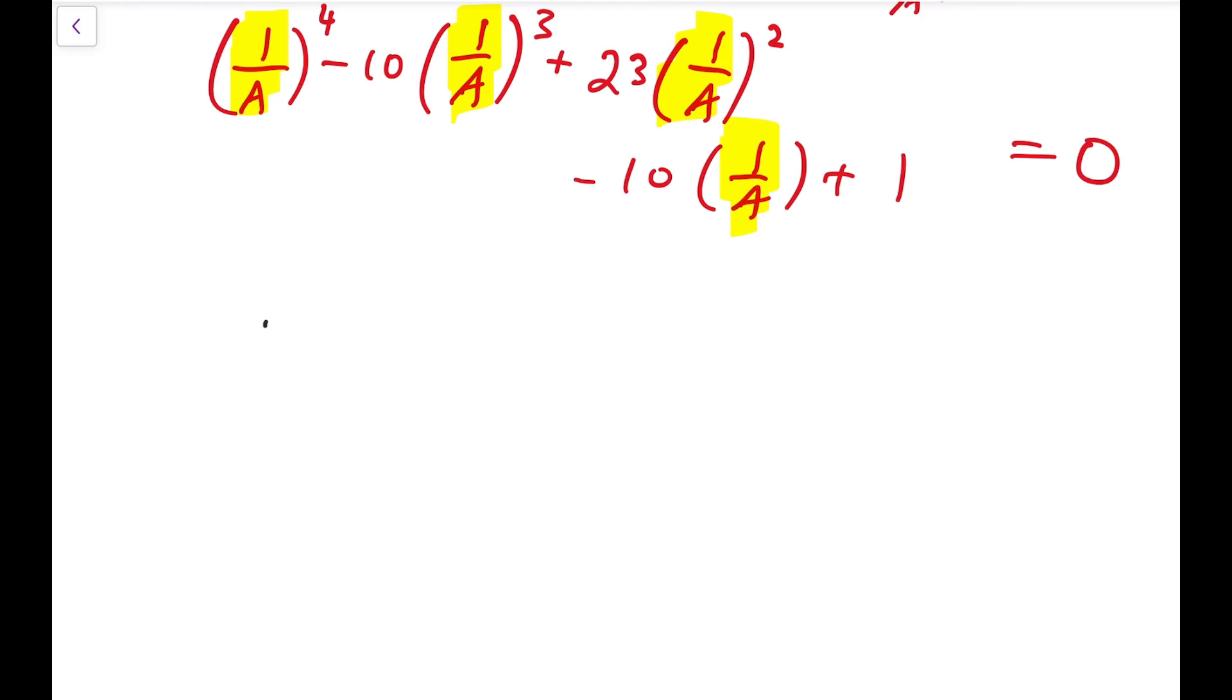If I try to factor the quadratic, it will be something like x minus a times x minus 1 over a. Now if we expand this, I'll get x squared minus a plus 1 over a times x plus 1 equals 0. Now at this point, it's not important on the coefficient of x. We just need to bear in mind that we have x squared at the start and plus 1 at the end.